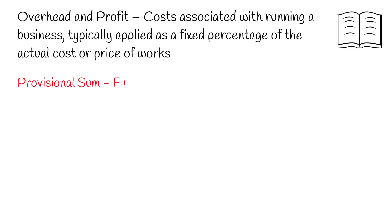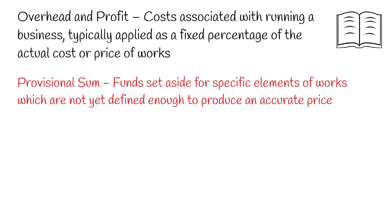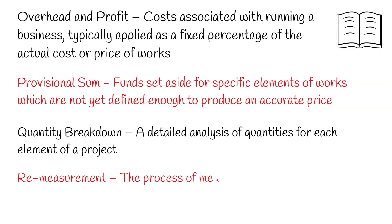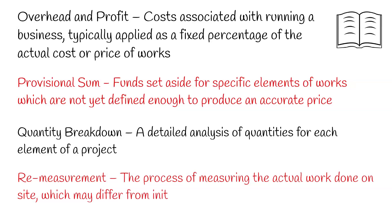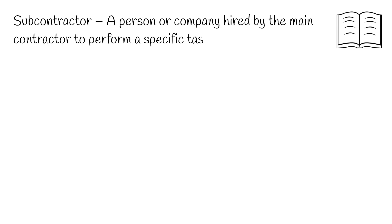Term 15. Provisional Sum — funds set aside for specific elements of work which are not yet defined enough to produce an accurate price. Term 16. Quantity Breakdown — a detailed analysis of quantities for each element of a project. Term 17. Re-measurement — the process of measuring the actual work done on site, which may differ from initial estimates. Term 18. Subcontractor — a person or company hired by the main contractor to perform a specific task as part of the overall project.